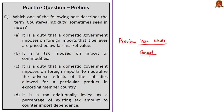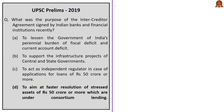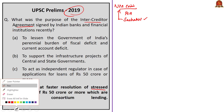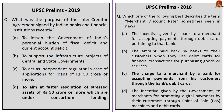For example, the NPA crisis in the banking sector for the past 3-4 years saw many government interventions like the PCA framework and Project Sashakt. There was a question in the 2019 UPSC prelims on Project Sashakt's inter-creditor agreement. If you know this agreement is related to NPA, you can arrive at the correct answer, which is option B. Similarly, in 2018 prelims, there was a question on merchant discount rate, which was relevant because digital transactions were picking up fast due to the Digital India initiative.